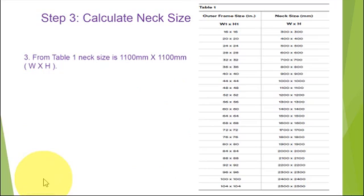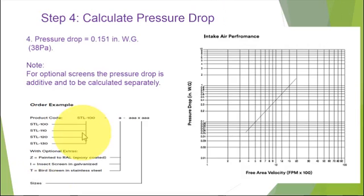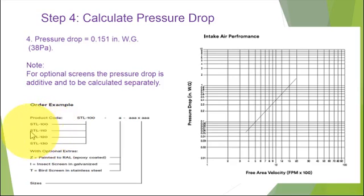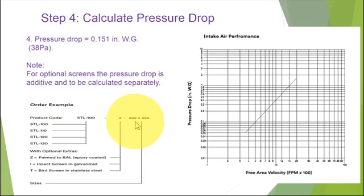To place the order with the supplier, we write the required size and the required perforated area — the required opening sizes of the sand trap louver itself. The model designation would be STL 100, STL 110, or STL 120. We write to the factory the required model, for example STL 100, along with the size we calculated in the previous sheet. Thank you for watching — please subscribe, like, and share this video. Thank you again, bye bye.